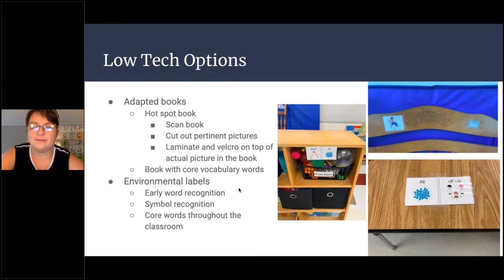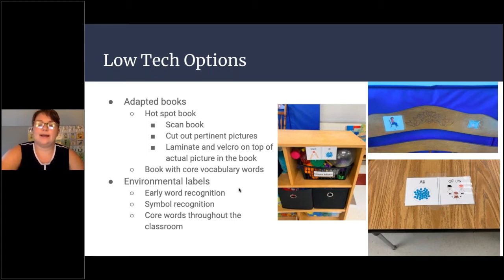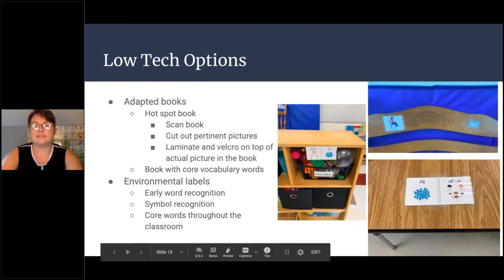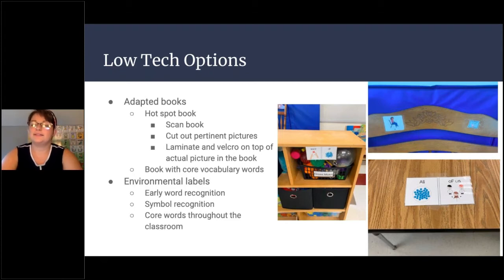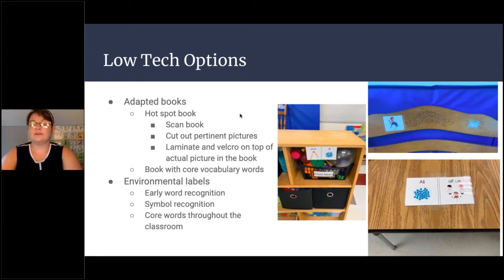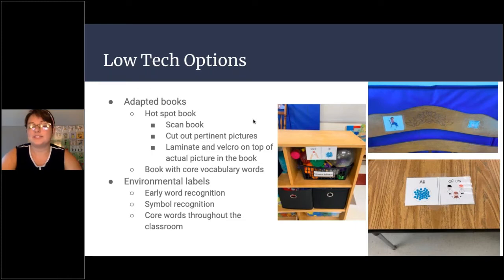Another big thing I love are environmental labels. In a number of classrooms we are doing core words and letters of the week, with corresponding environmental labels. The first week was 'A' and our core word was 'all,' so I put up labels saying 'all of us' and 'want all.' This provides a visual for students and a reminder for staff of things they can model using core words. We don't take them down after the week is over — before school closed we got all the way to the letter G, so that classroom is covered head to toe with environmental labels. It helps promote early word recognition, early symbol recognition, and core word use throughout the day.